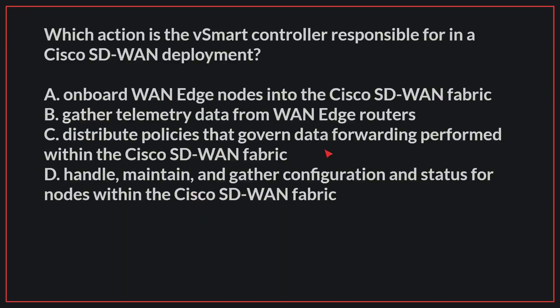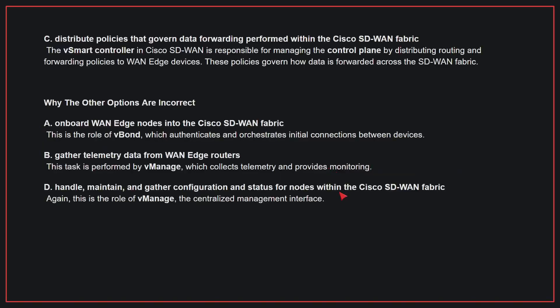Which action is the vSmart controller responsible for in a Cisco SD-WAN deployment? The correct answer is C. The vSmart controller in Cisco SD-WAN is responsible for managing the control plane by distributing routing and forwarding policies to WAN-edge devices. These policies govern how data is forwarded across the SD-WAN fabric.